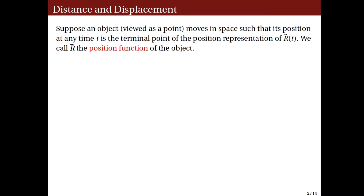Imagine a particle or a point moving in the three-dimensional space. Let r of t be a vector in the position representation such that its terminal point is the position of the particle at any given time t. So for example, at t equals 0, r of 0 is a vector in the position representation whose terminal point is the starting point of the particle that moves in space. Since the vector function r of t gives us the position of the particle at any given time, we call this the position function of the object.